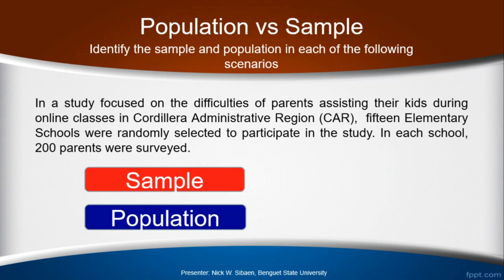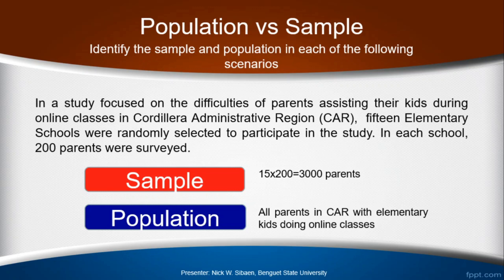In a study focused on the difficulties of parents assisting their kids during online classes in the Cordillera Administrative Region, 15 elementary schools were randomly selected to participate in the study. In each school, 200 parents were surveyed. The sample is the parents surveyed — 15 schools times 200 parents per school gives 3,000 parents. The population involves all parents in CAR with children doing online classes that they need to assist.